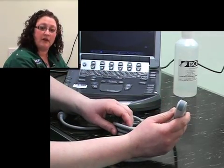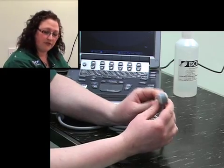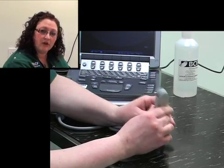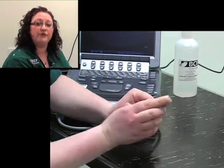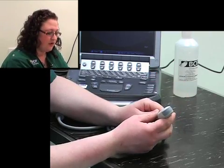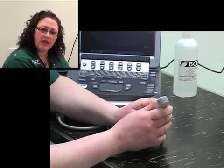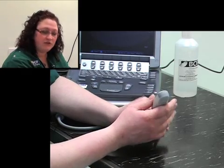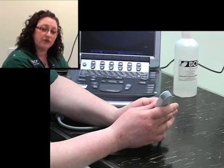First off, for this type of examination, we will be using a curvilinear probe. This particular type is a microconvex probe. What's quite good about this is it has quite a small footprint, which is the scanning surface of the probe, also called the transducer. What's good about having a small footprint is that you're able to really get up underneath, say, the rib cage to be able to get a really good image of a structure such as the liver.